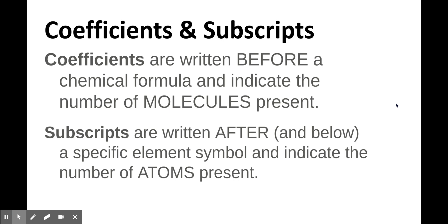One thing I want to point out and make sure everyone is clear on: there are two different types of numbers that we use in chemical reaction equations — coefficients and subscripts. The coefficients are the numbers written before a chemical formula to indicate how many molecules of that thing are present in the reaction. Subscripts are written after and below a specific element to indicate how many of those atoms are present, or sometimes after a polyatomic ion to tell you how many of those groups are in that particular compound.